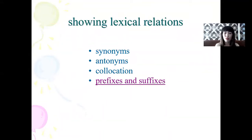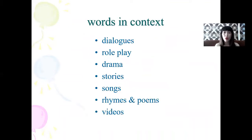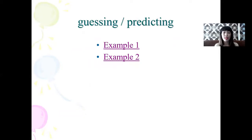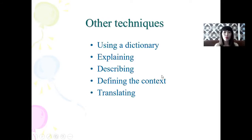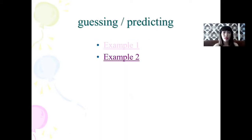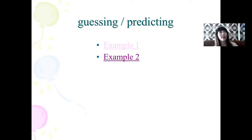We can also present words in context — it can be in dialogues, while having some role play, drama, story, songs, rhymes, and poems. Guessing and predicting is another approach. For guessing, don't say the translation — just give them a situation or a definition according to the word, and they will try to guess the translation.